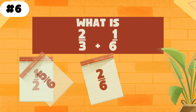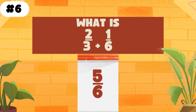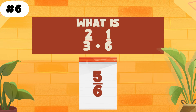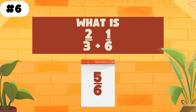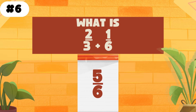What is 2 thirds plus 1 sixth? The answer is 5 sixths. To add two fractions, ensure they have the same denominator, add the numerators, and keep the denominator the same. If the denominators are different, find a common denominator first.